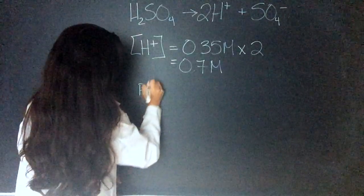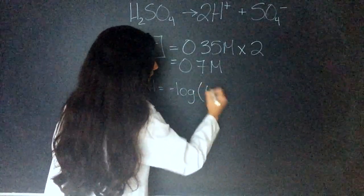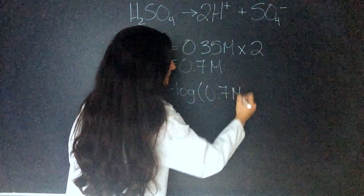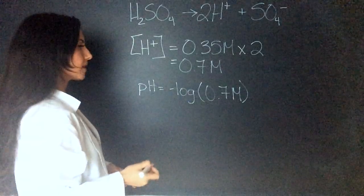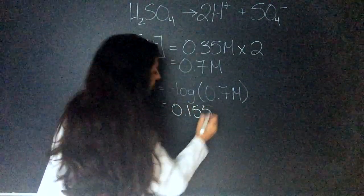So pH equals negative log base 10, which I don't have to write because that's kind of the basics, times 0.7. This equals 0.155.